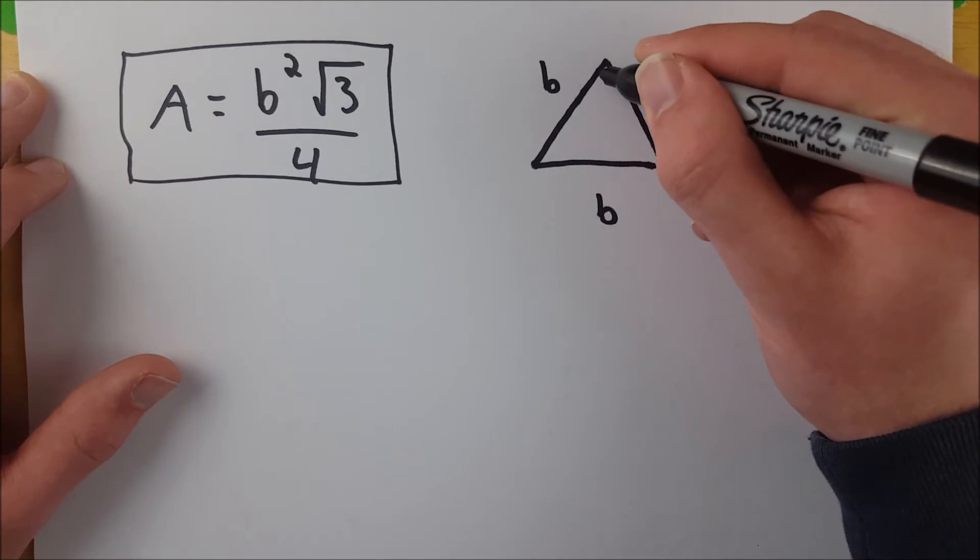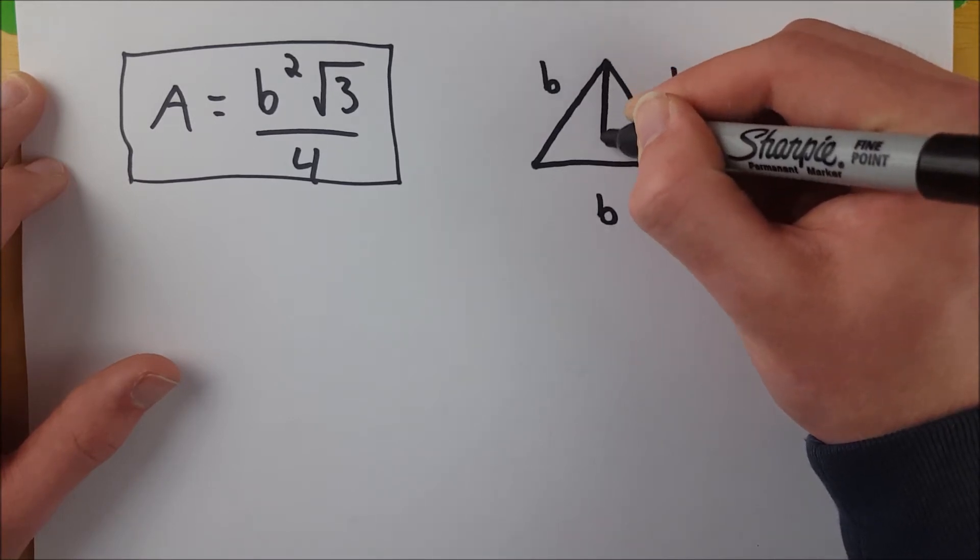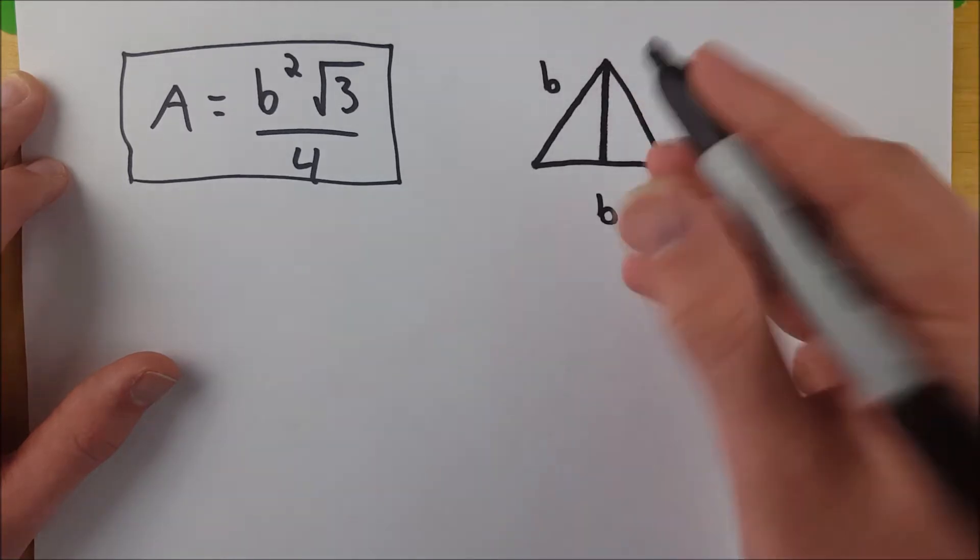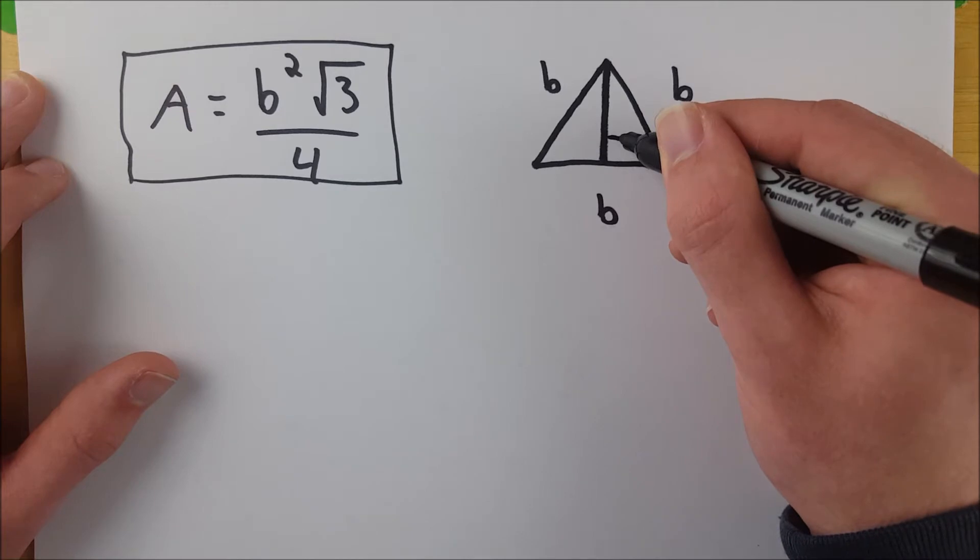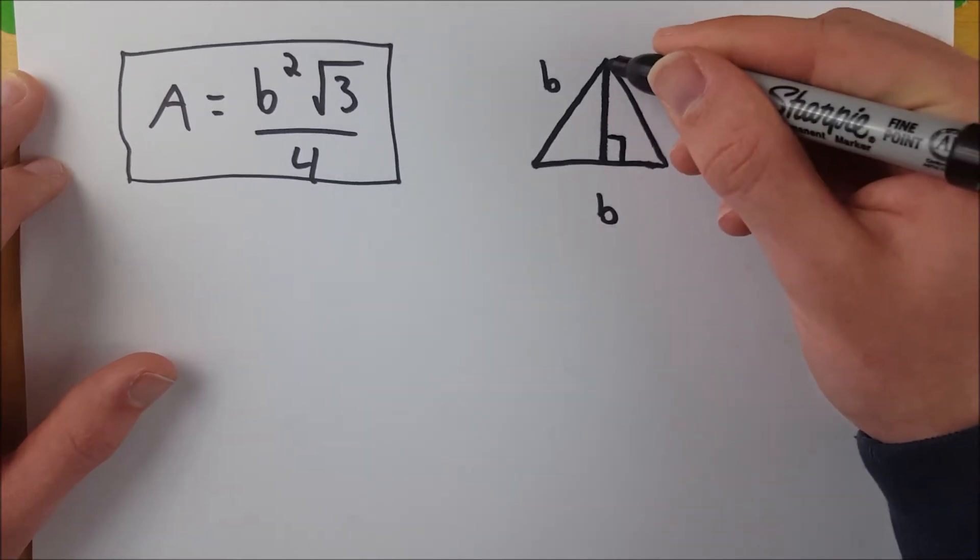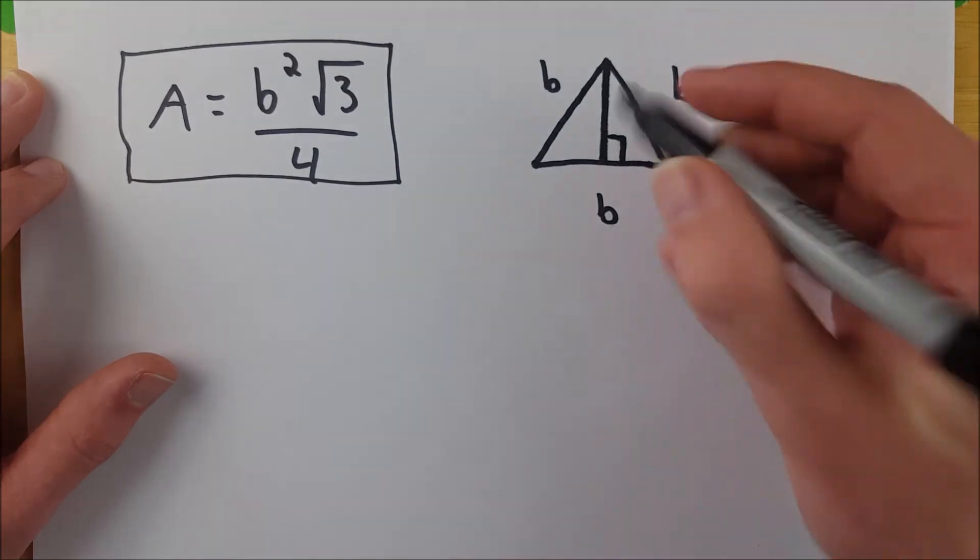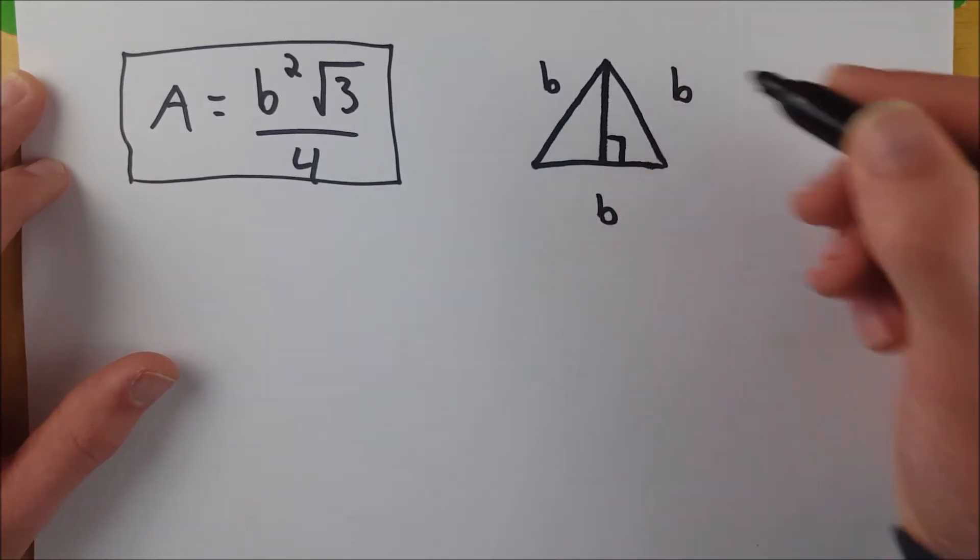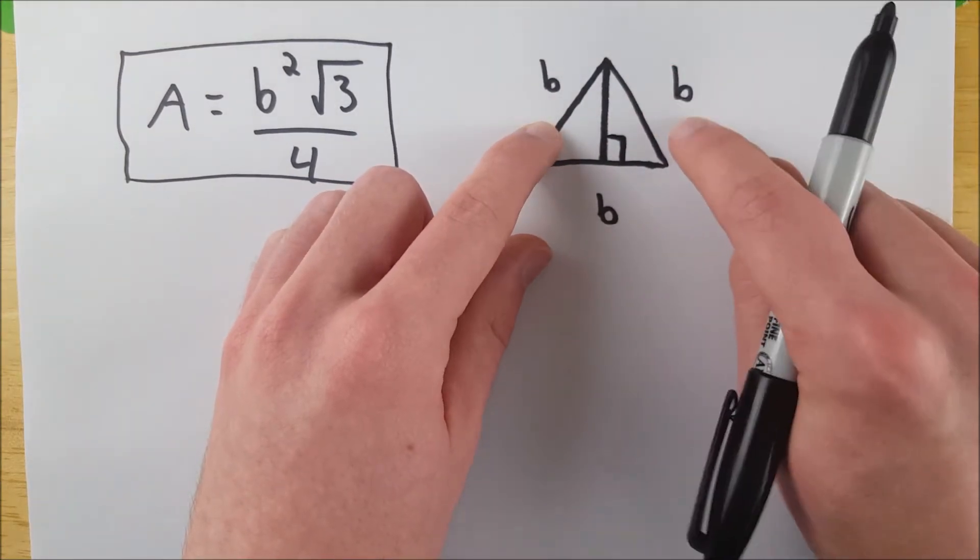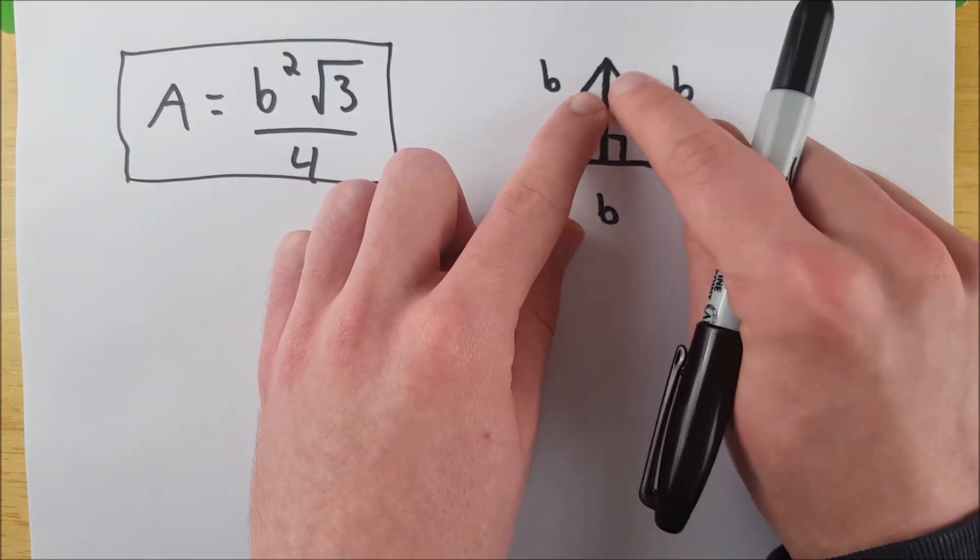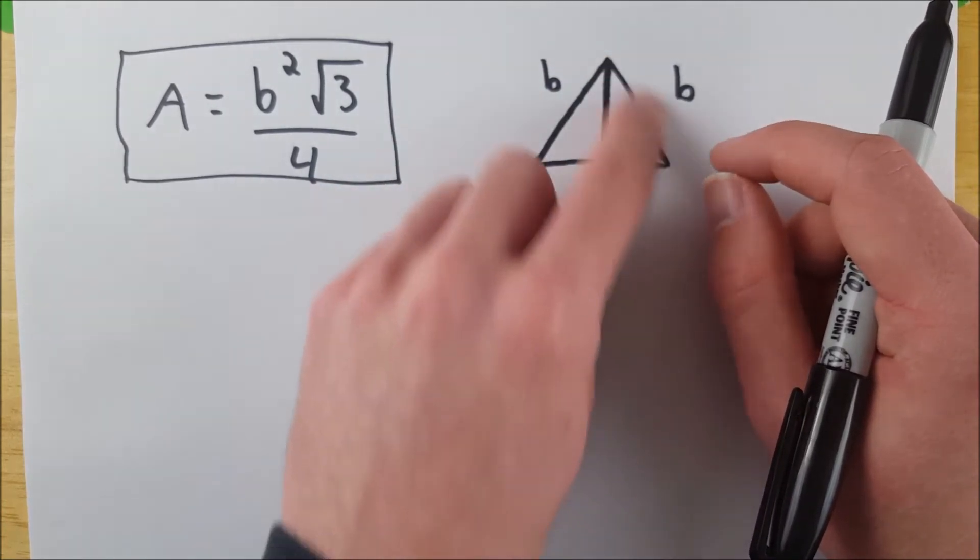And now we can bisect this angle here, draw an angle bisector, and drop it down here. Then we know that this angle right here is perpendicular. So we know that this angle bisector perpendicularly bisects this side because these two triangles have to be congruent by side angle side. This side is congruent to this side. This angle is congruent to this angle, and this side is congruent to itself. So these two triangles are congruent.